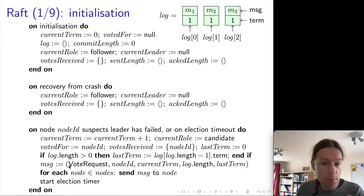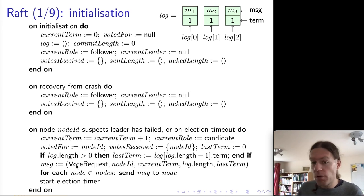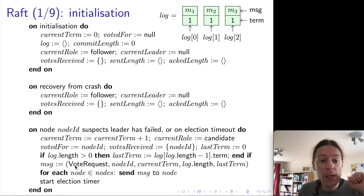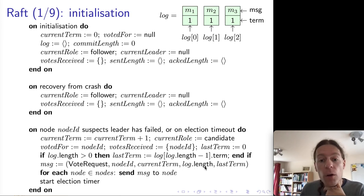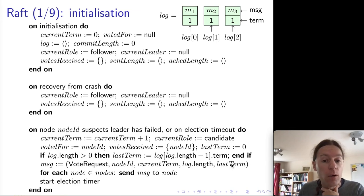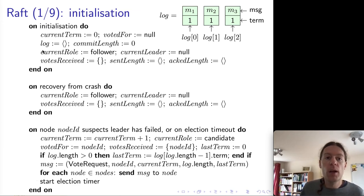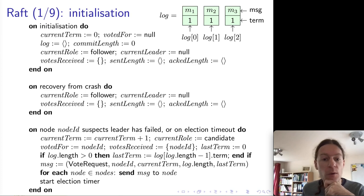The voteRequest message contains the node ID of the candidate, the current term after it has been incremented, the length of the log on the candidate, and this lastTerm variable — the term field of the last log entry in the candidate's log. It sends this same message to all of the nodes and starts a timer that might eventually time out if it doesn't manage to complete the election successfully.